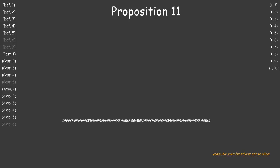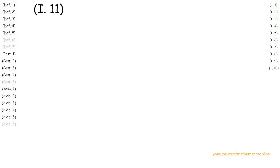In Proposition 11, we prove that we can always pick a point anywhere on a straight line to create a perpendicular line. To begin this proposition, we are given an arbitrary line AB and a random point C on line AB.